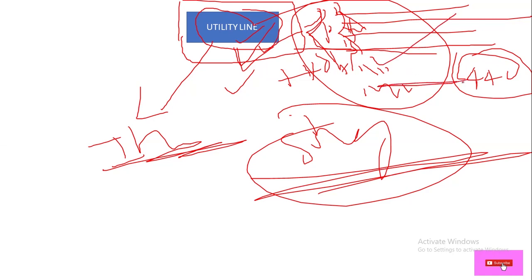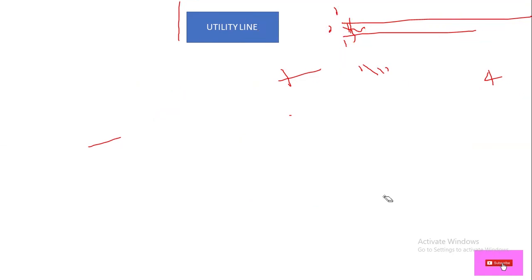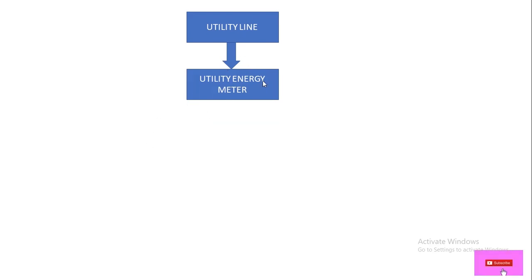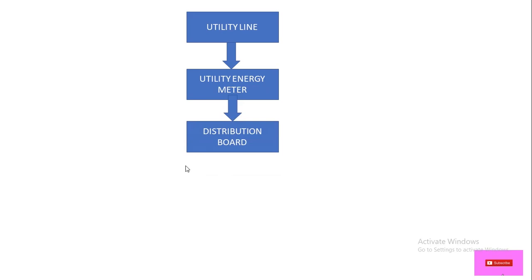We only tap off single phase from this utility line. There are two options: overhead line system and underground system. We take a single phase power supply from the utility line and give it to the utility energy meter. This energy meter belongs to the utility company, and they will charge us according to our power consumption.